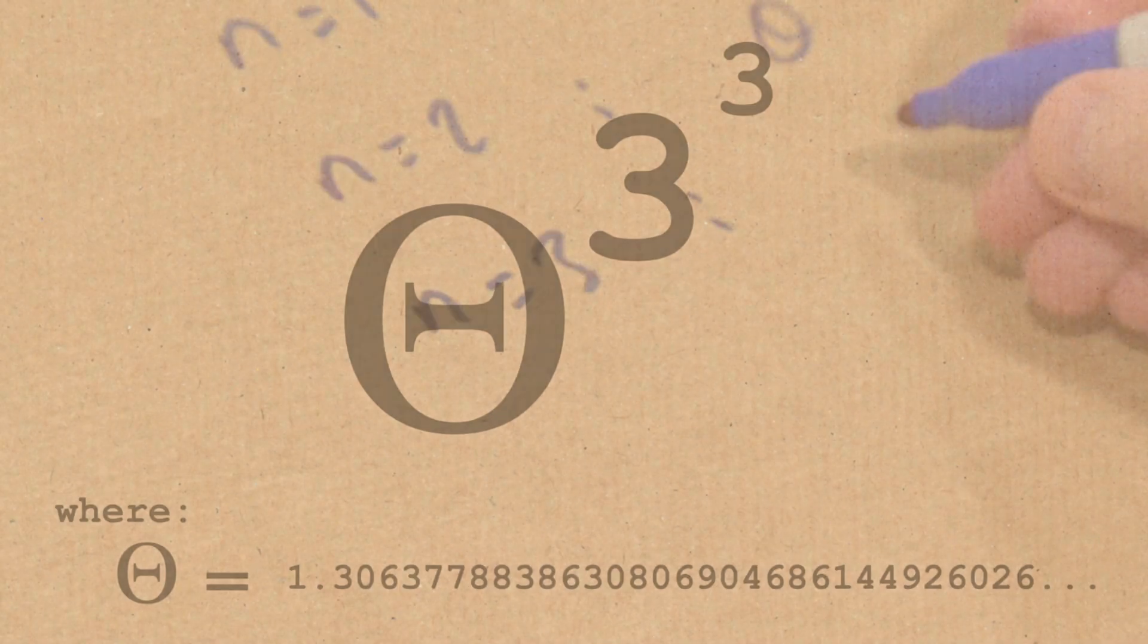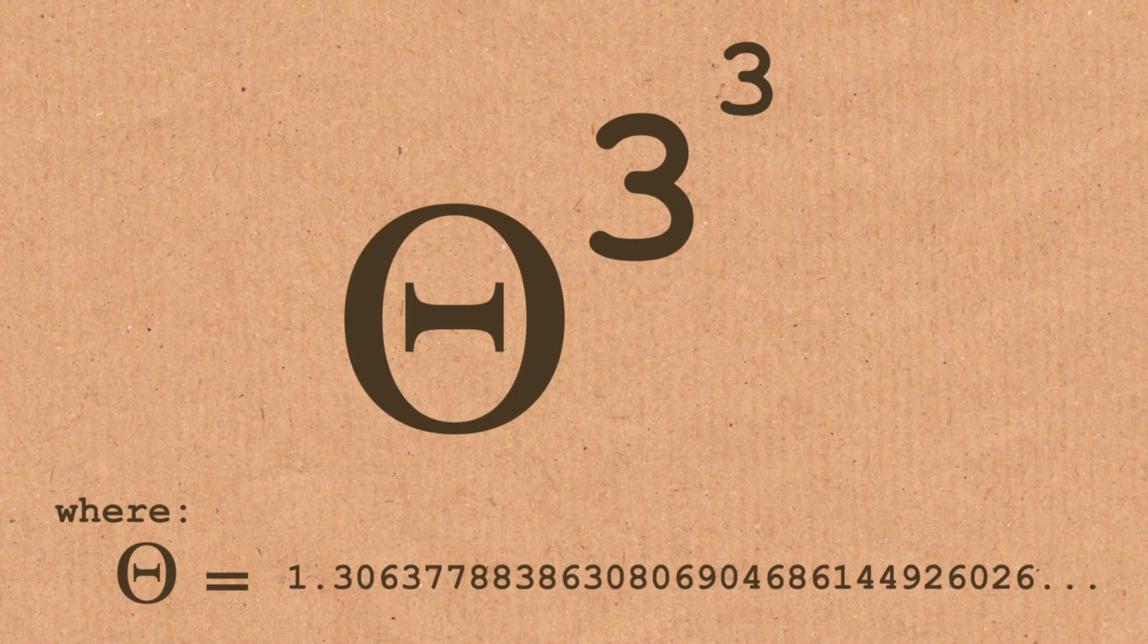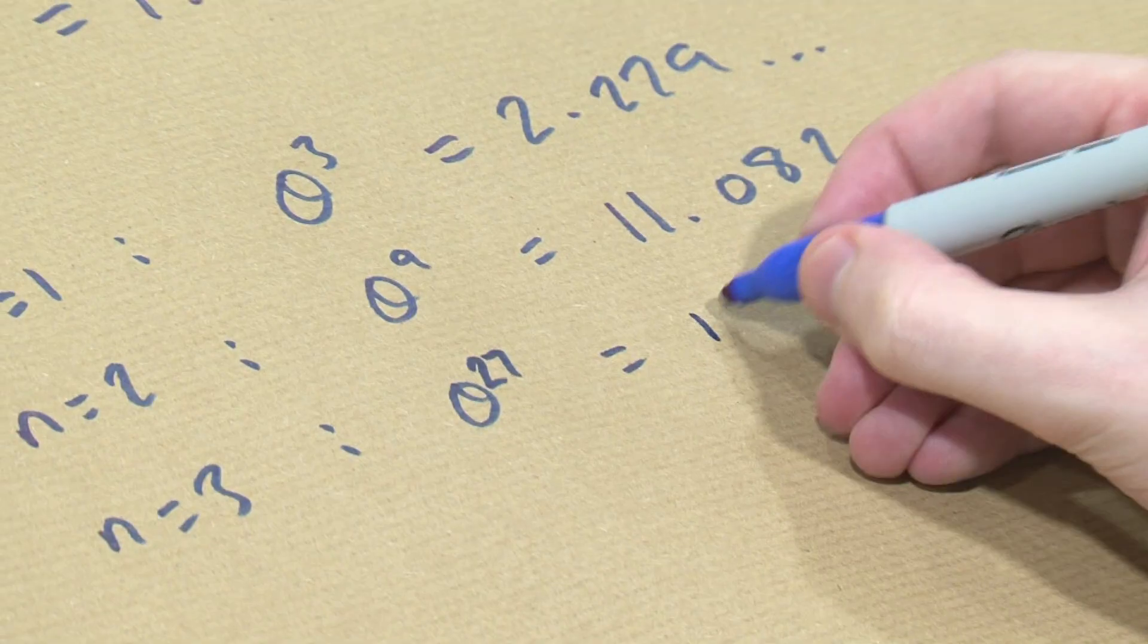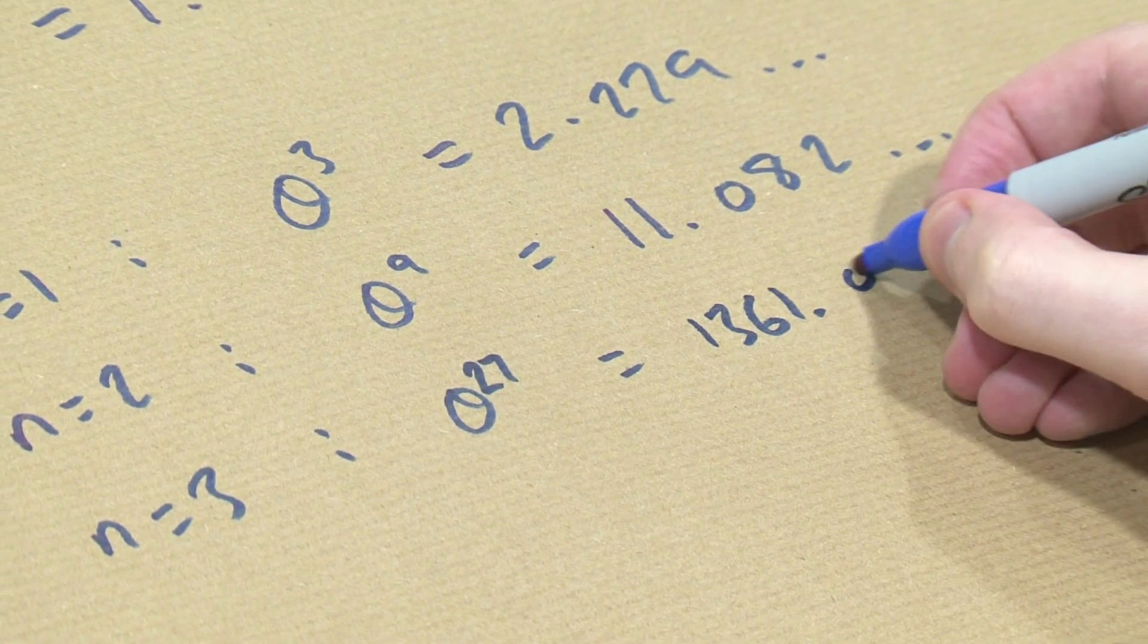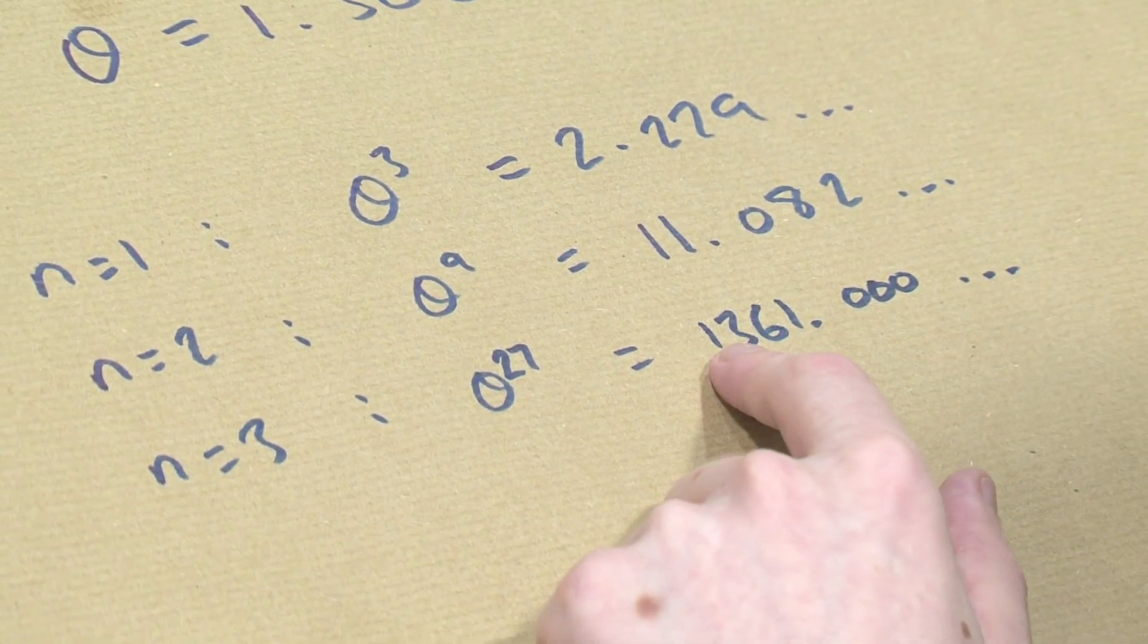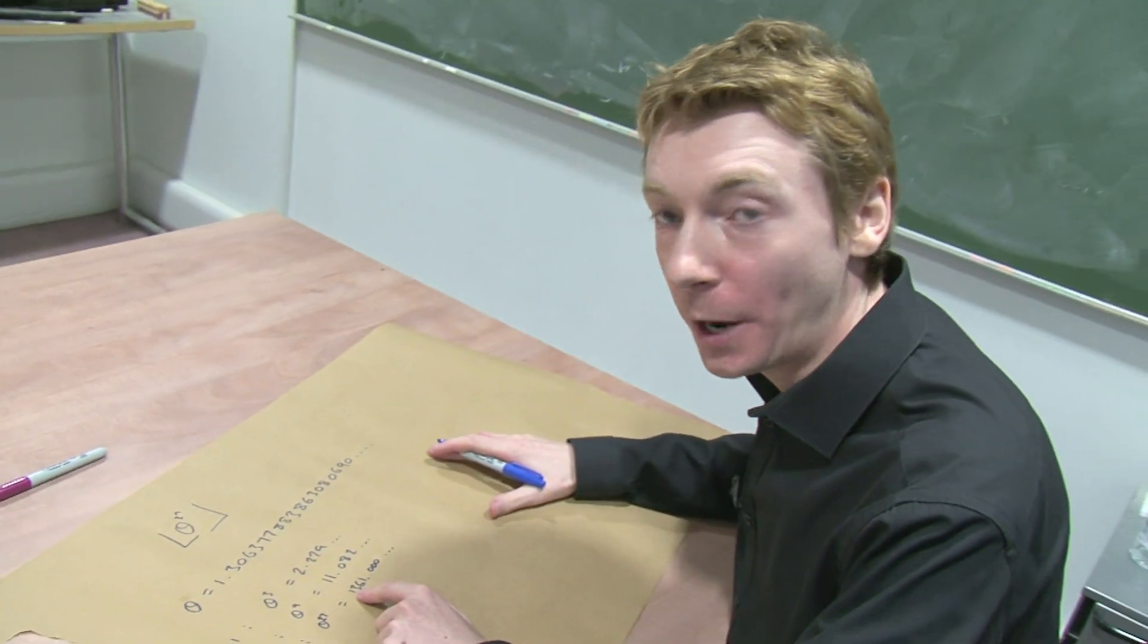Let's do n equals 3. So I now need theta 3 to the power 3, 27. Theta to the power 27 is 1,361.00 something, something, something. 1,361 is a prime as well.